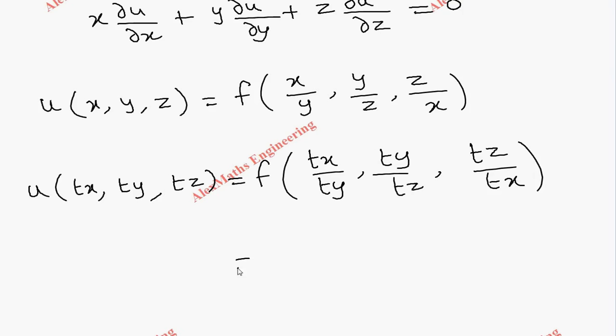Now, after canceling all the t terms here, we get back the original function. So, let's write this as f(x/y, y/z, z/x).